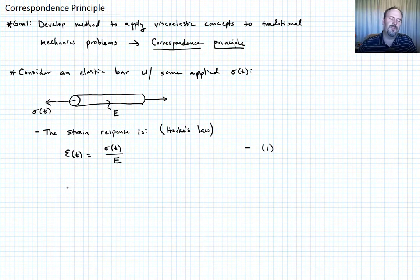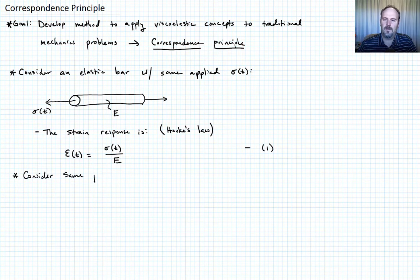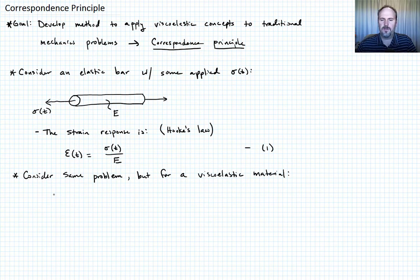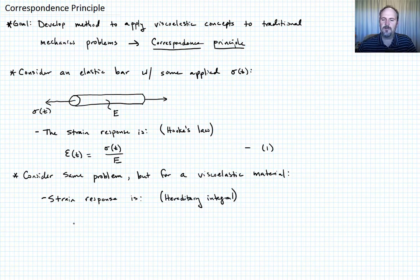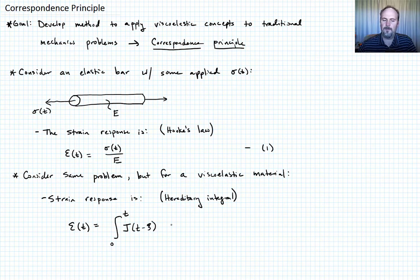Now let's consider the same problem but for a viscoelastic bar. We now have the tools to solve that using our hereditary integral. The strain response is epsilon(t) = integral from 0 to t of the creep compliance J(t − ζ) times sigma-dot(ζ) dζ. We'll call that Equation 2.